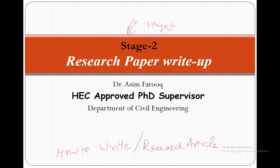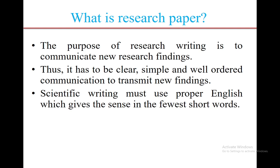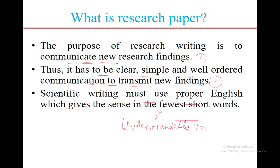The purpose of research writing is to communicate new research findings. It should be simply communicated and transmitted to produce new outcomes and findings. Scientific writing must use a common language through which we can communicate and transmit knowledge around the world. A scientific paper is a short, concise article where you summarize a very large body of work — perhaps 100 to 200 pages — in less than 10 pages. This requires a strong grip on your writing skills.